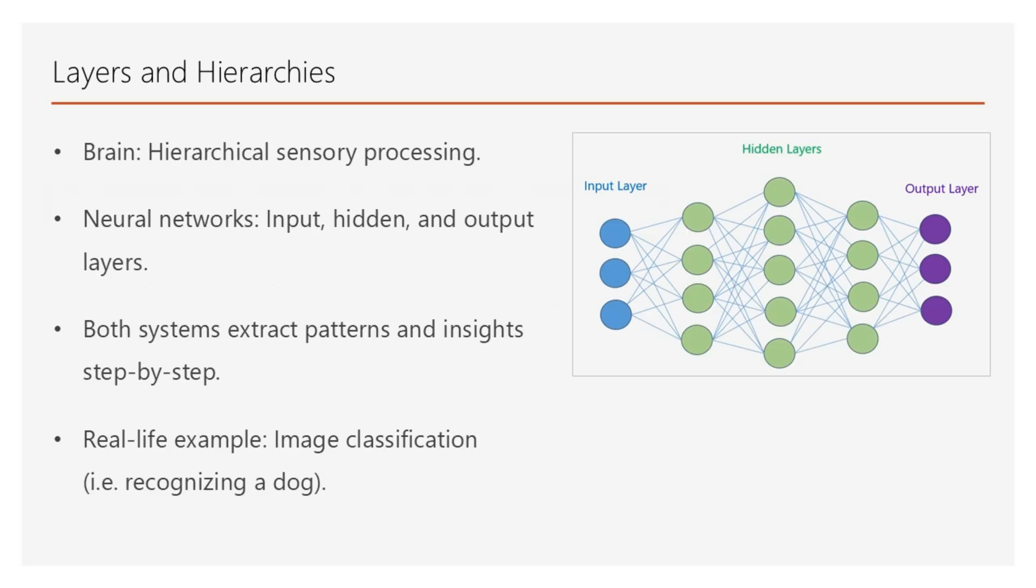Both the brain and neural networks process information hierarchically, step by step, from basic to complex. In the brain, sensory information flows from basic processing areas, such as sensory organs like eyes and ears, to higher-order regions for interpretation. Similarly, neural networks start with an input layer which mimics sensory inputs by taking raw data, then process it through hidden and output layers to generate meaningful results.